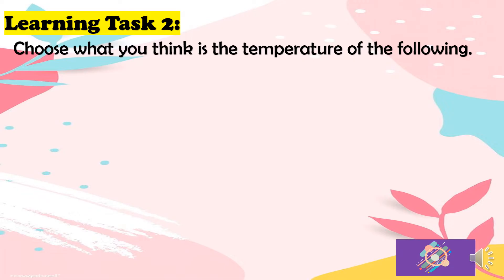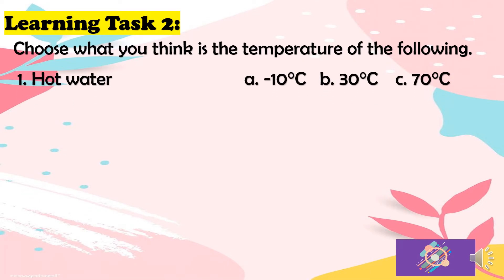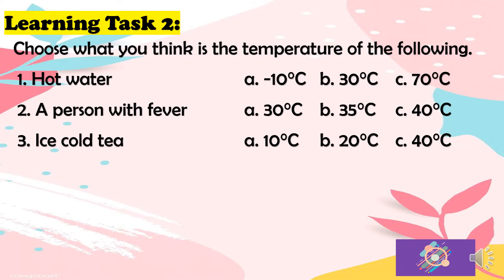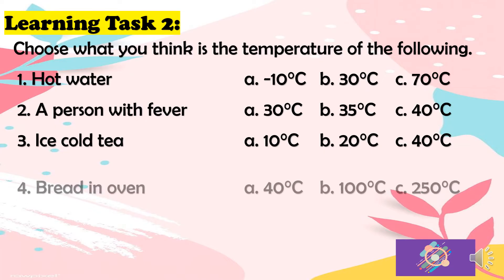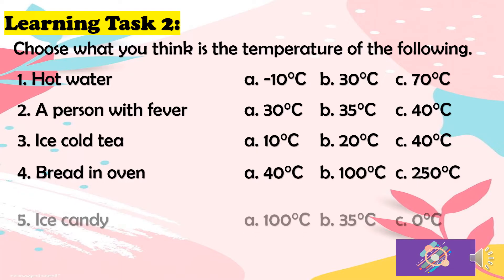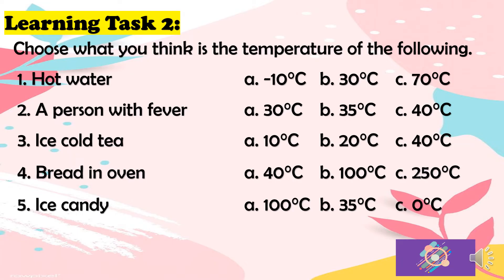For learning task 2, choose what you think is the temperature of the following. Number 1: hot water — A) negative 10°C, B) 30°C, or C) 70°C. Number 2: a person with fever — A) 30°C, B) 35°C, or C) 40°C. Number 3: ice cold tea — A) 10°C, B) 20°C, or C) 40°C. Number 4: bread in oven — A) 40°C, B) 100°C, or C) 250°C. Number 5: ice candy — A) 100°C, B) 35°C, or C) 0°C.